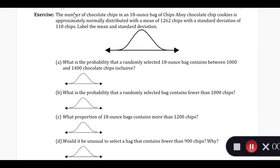Hello, these are the exercises for the normal probability. The number of chocolate chips in an 18-ounce bag of Chips Ahoy chocolate chip cookies is approximately normally distributed with a mean of 1,262 chips and a standard deviation of 118 chips.